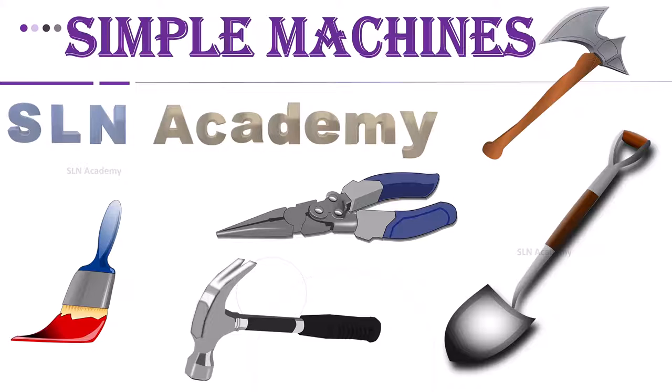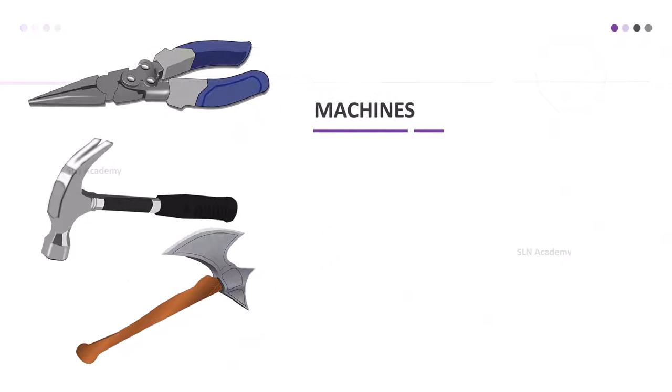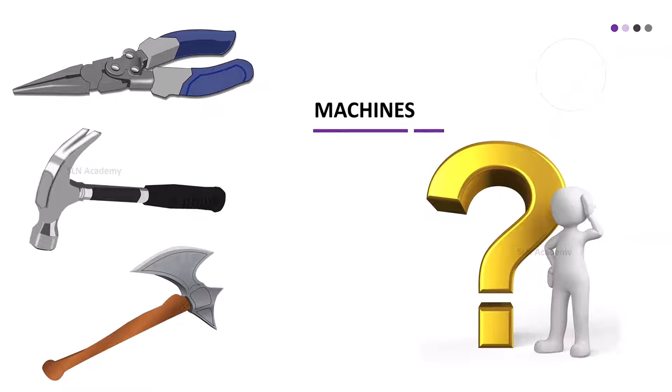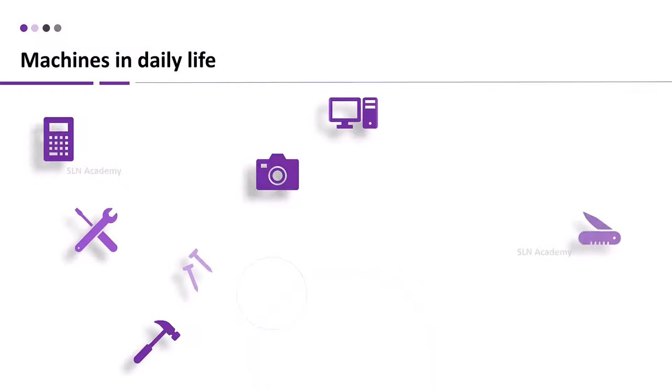Welcome back to SLN Academy. Today's topic is Simple Machines. What is a machine? A machine is anything that reduces the effort required to do the work. Machines are the tools that make our daily tasks faster and easier.